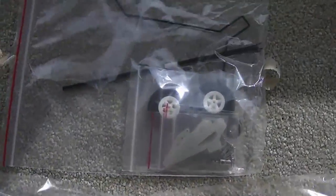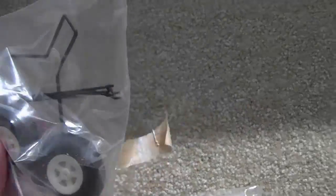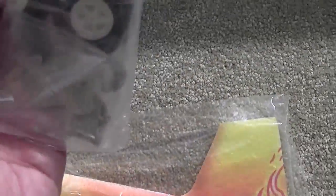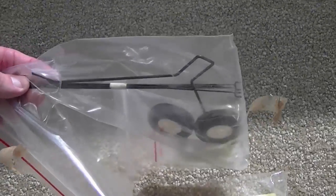Then there's a bag of parts. Nice wheels, nice and spongy. Looks like good landing gear. And there's the control rods for the servos.